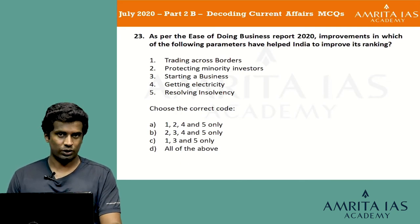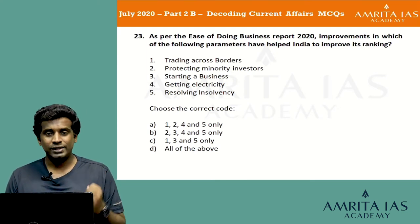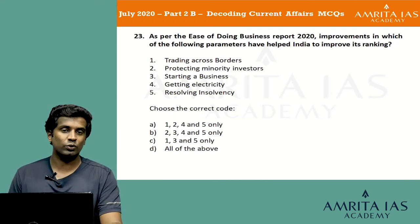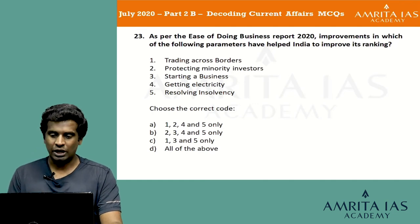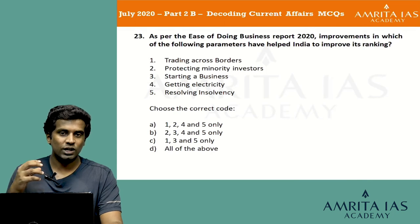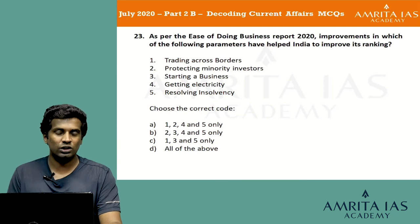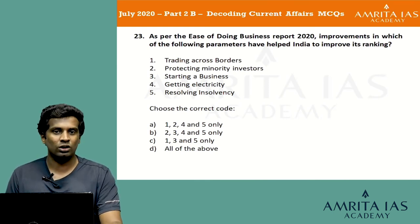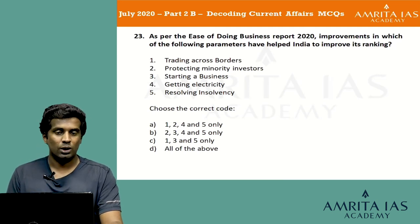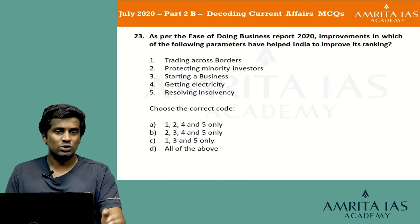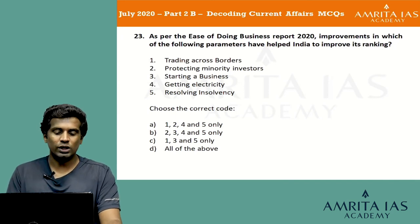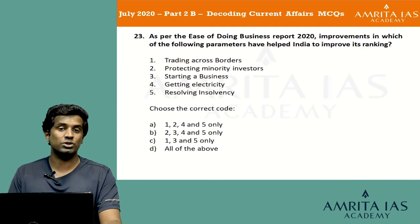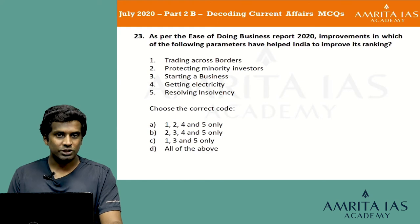The ease of doing business report of 2020 has been consistently in the news as India has been among the top performers globally. India definitely improved in resolving insolvency with the implementation of the Insolvency and Bankruptcy Code, so option 5 should be present. Option 5 is in all options. However, protecting minority investors is something India has not improved on — it has actually declined. Removing option 2 leaves only option C: 1, 3 and 5 only.